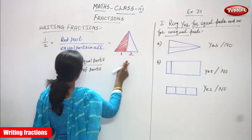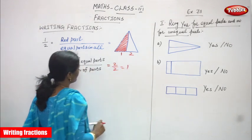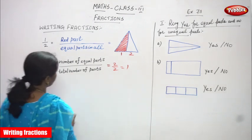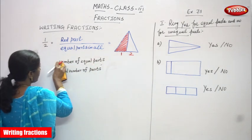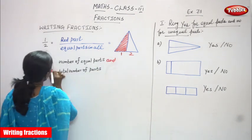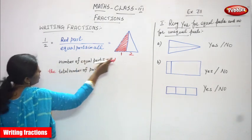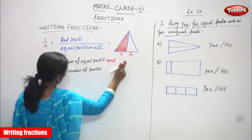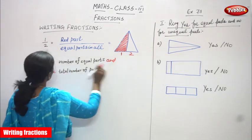Number of equal parts — how many? It's 2. And total number of parts also is 2. That means 2 by 2 you can get what? 1. It's not a right fraction. We have to write the number of shaded parts and the total number of parts. Here, the red part is only one part. How many equal parts? Number of equal parts is 2, and the total number of parts is also 2. So, 1 by 2.